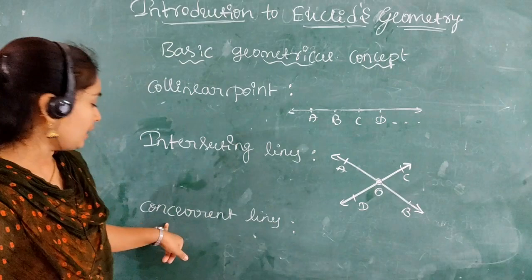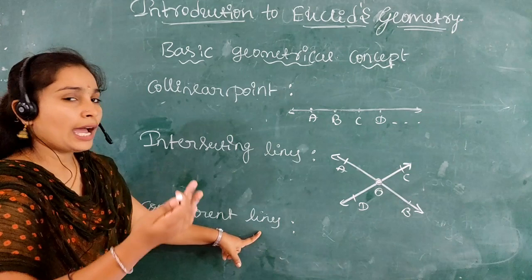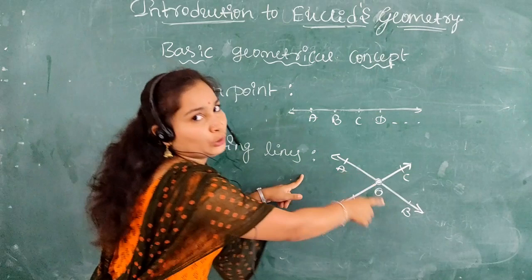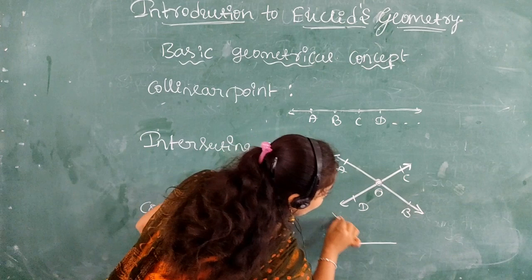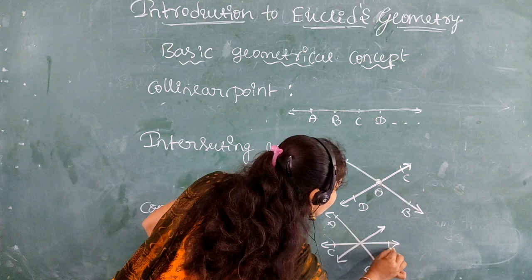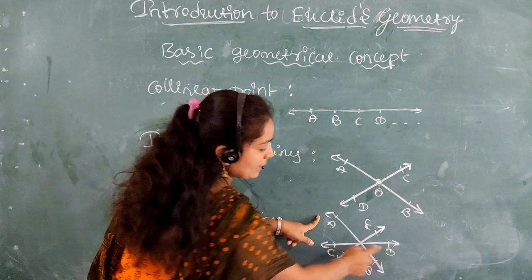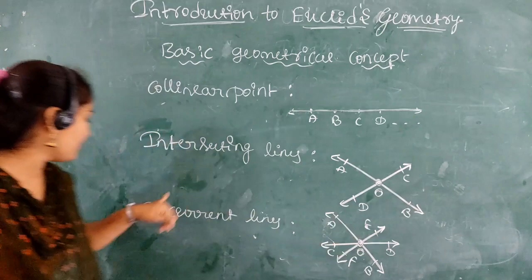The next concept is concurrent lines. Concurrent lines are three or more lines that intersect at the same common point. For example, lines AB, CD, and EF are three lines that all intersect at one point O. Such figures we call concurrent lines.